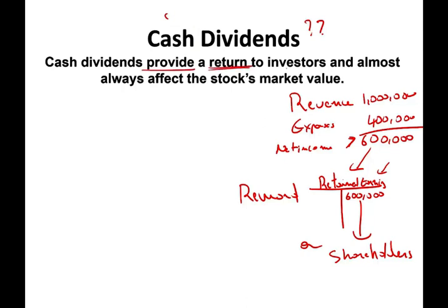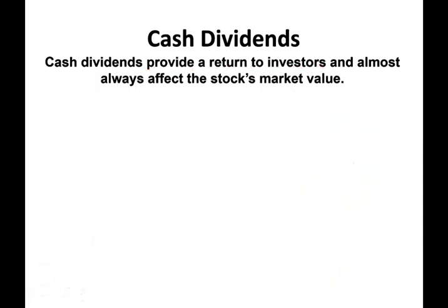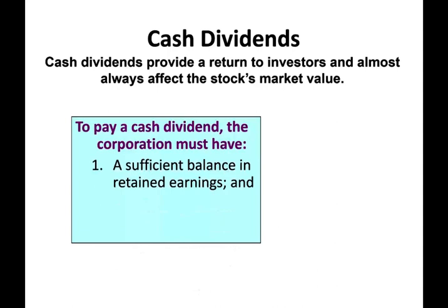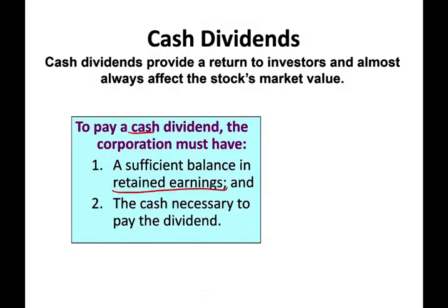Cash dividends provide a return to investors and shareholders, and almost always affect the stock market value — usually positively, especially if the company keeps increasing the dividend. To pay dividends you have to have the cash and you have to have retained earnings, because dividends come out of retained earnings. The idea is you are rewarding the investors from the profit that the company generated, which sits in retained earnings.